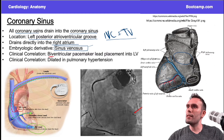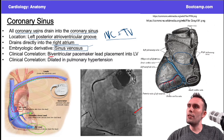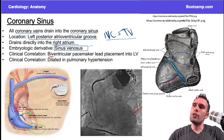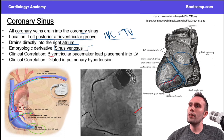The generator is placed just under the skin. You run a venous line through the subclavian vein, down the superior vena cava, and into the right atrium — that's where you drop off the first lead. Then you go into the right ventricle for the second lead. The question is: how do you get the third lead into the left ventricle?